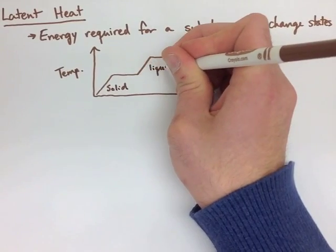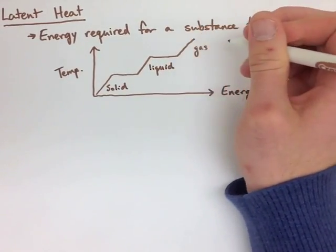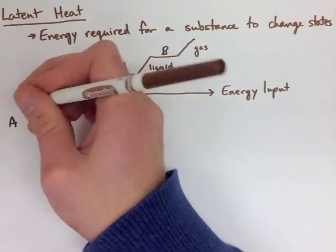If you look at the diagram we're drawing, we have a solid at the bottom. We put in some energy. The temperature rises. Then at A and B, we don't actually have any temperature rise, but we are increasing the temperature.